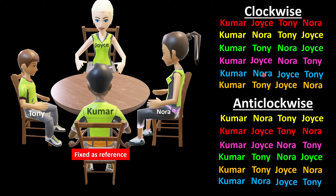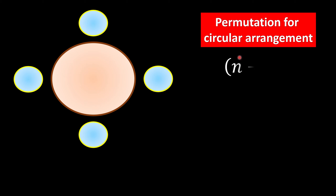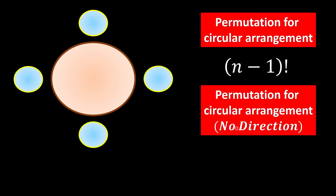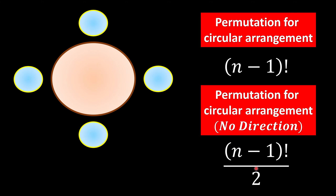In conclusion: for a circular arrangement of n seats, the formula is (n−1) factorial. Whenever directions don't matter — like a bracelet — we divide by 2, because clockwise and anti-clockwise are treated as the same.